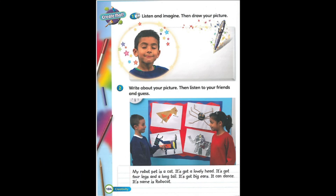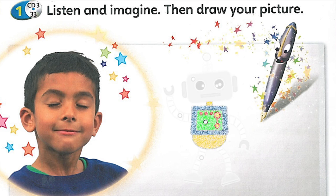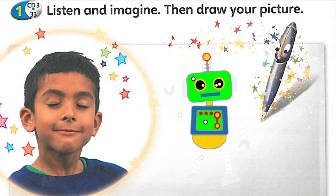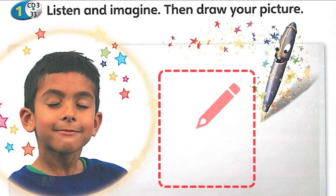Students' Book, page 104. 1. Listen and imagine, then draw your picture. Close your eyes. Imagine a robot — a beautiful robot pet. Here's the head. And here are the ears. Here's the right arm and the left leg. Here's the left arm and here's the right leg. Now draw your robot pet.